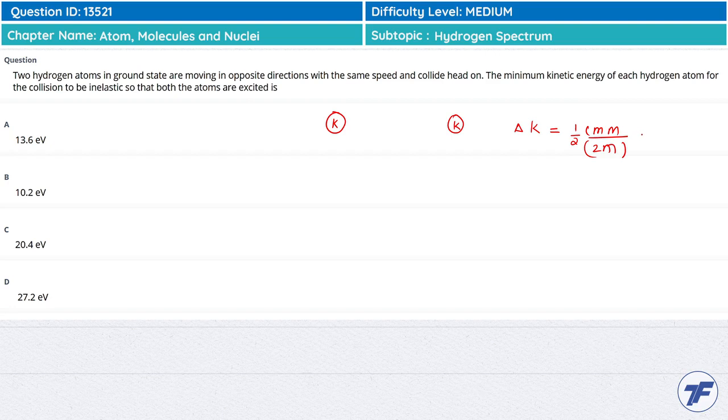Into v relative squared. The relative velocity is 2v because this one is coming at v and this one is also coming at v, so the relative speed becomes 2v. Squaring this, the total loss becomes mv squared.